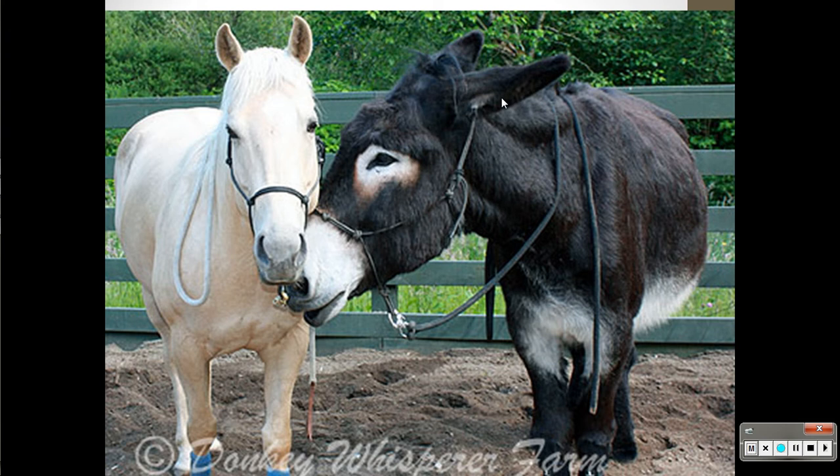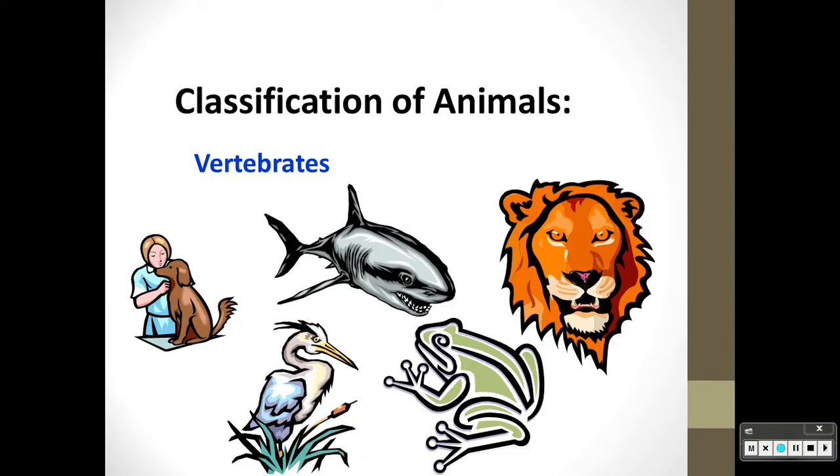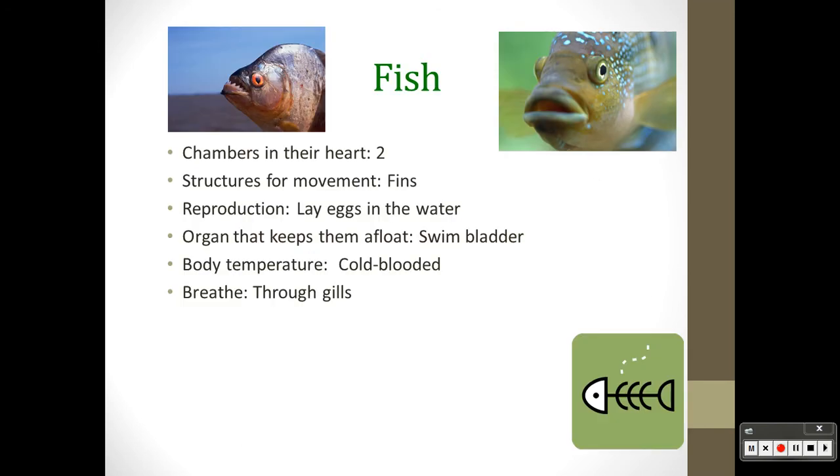Species are a group of animals that are similar and can produce offspring that can produce offspring, so genetically viable. We're going to go into a classification of animals known as vertebrates. Vertebrates are animals that have a backbone, and inside the backbone a central nervous system.